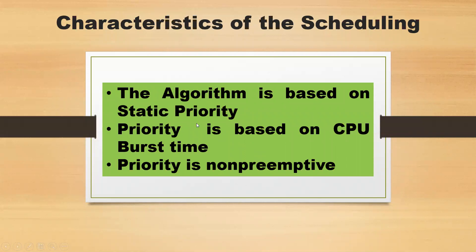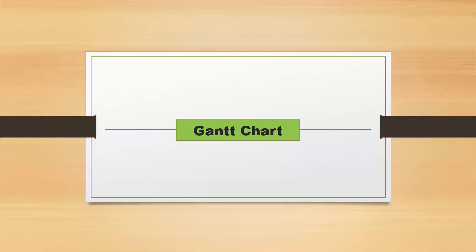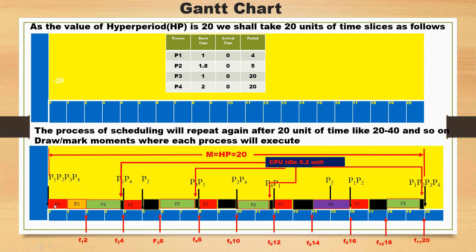The algorithm is based on static priority, where priority is determined by CPU burst time, and it is non-preemptive — you cannot preempt any task. The Gantt chart shows: P1 (1 unit), P3 (1 unit), P2 (1.8 units), CPU idle (0.2); then P1 (1), CPU idle (1), P2 (2 units), P1 (1), CPU idle (1), P4 (2 units), P1 (1), CPU idle (1), P2 (1.8), CPU idle (0.2). This completes one hypercycle which then repeats.